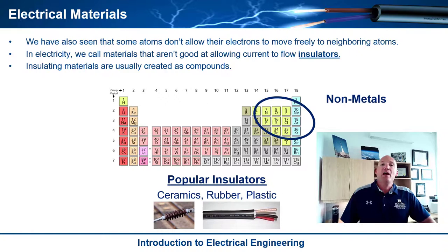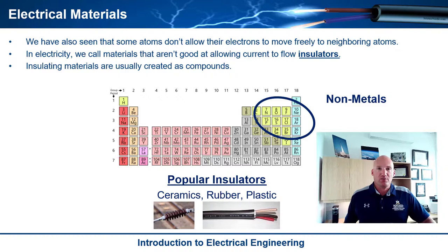When you think about plastics and rubbers, just think about wires. We've all probably seen a wire — they typically have a coating around them. That's a rubber or plastic coating that allows us to touch the conductor without getting electricity flowing into us or influencing the electricity. It also prevents the electricity from shorting out or touching some other conductor and having the electricity go somewhere you don't want it.